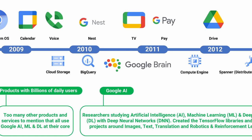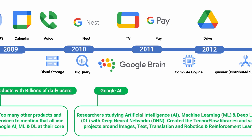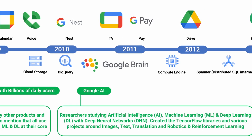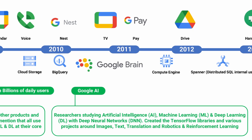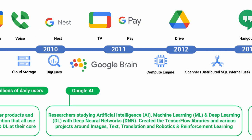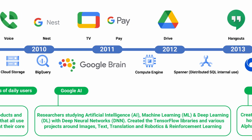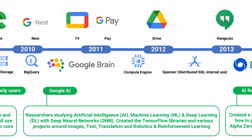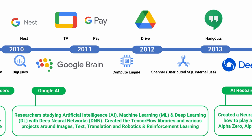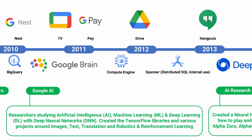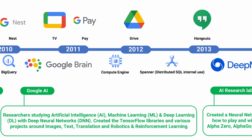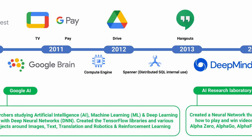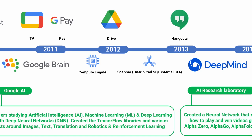Google Brain and Google AI are a team of researchers studying artificial intelligence, machine learning, deep learning and deep neural networks. They are the same team that created the TensorFlow libraries and various projects around images, text, translation, robotics and reinforcement learning.